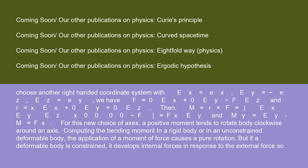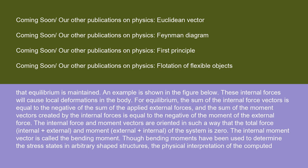Computing the bending moment: in a rigid body or in an unconstrained deformable body, the application of a moment of force causes a pure rotation. But if a deformable body is constrained, it develops internal forces in response to the external force so that equilibrium is maintained. An example is shown in the figure below. These internal forces will cause local deformations in the body. For equilibrium, the sum of the internal force vectors is equal to the negative of the sum of the applied external forces, and the sum of the moment vectors created by the internal forces is equal to the negative of the moment of the external force. The internal force and moment vectors are oriented in such a way that the total force (internal plus external) and moment (external plus internal) of the system is zero. The internal moment vector is called the bending moment.